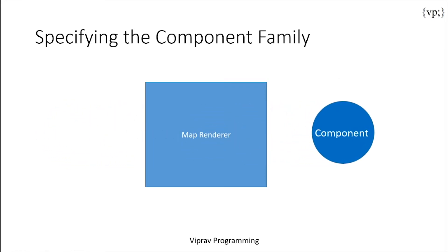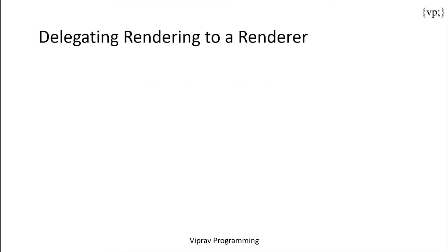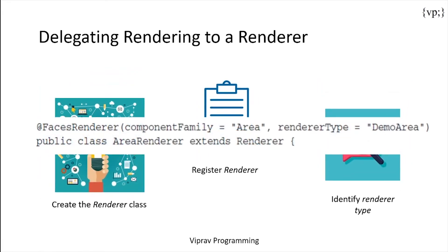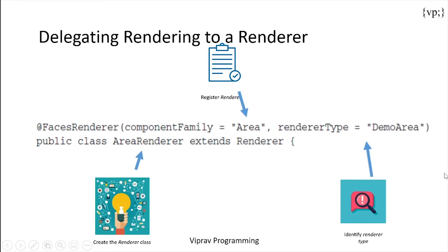To delegate rendering to a renderer, you perform these tasks: create the renderer class, register the renderer with the render kit using the @FacesRenderer annotation, and identify the renderer type in that annotation. For example, you create the renderer class called AreaRenderer that extends Renderer, and you register it by setting component family to 'Area' and the renderer type to 'demo.Area'.